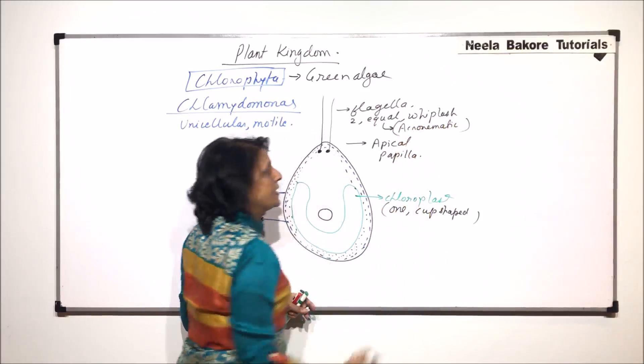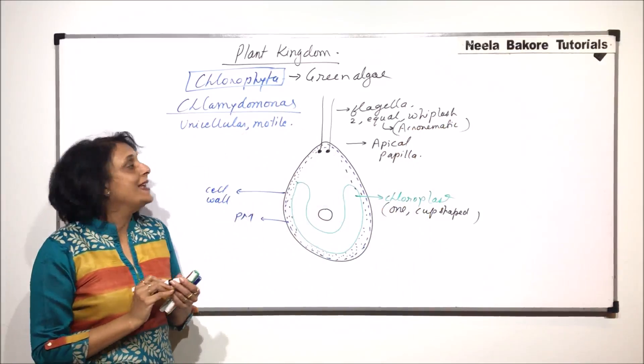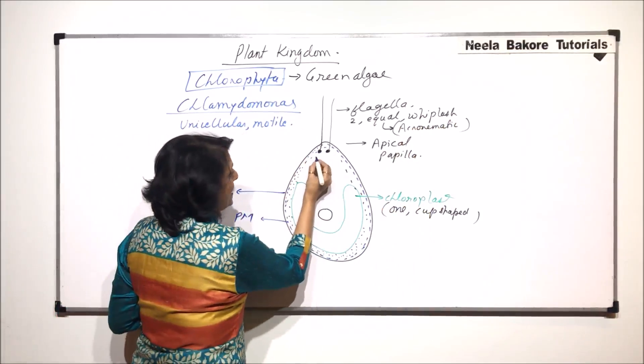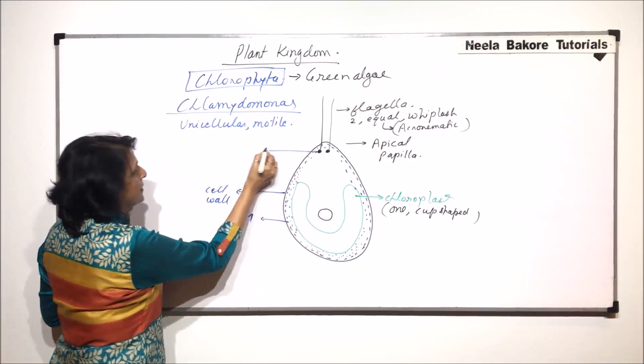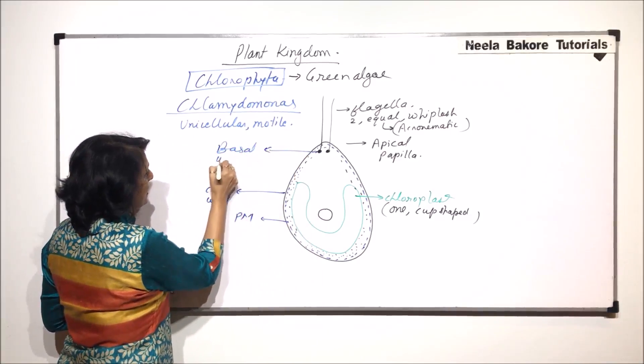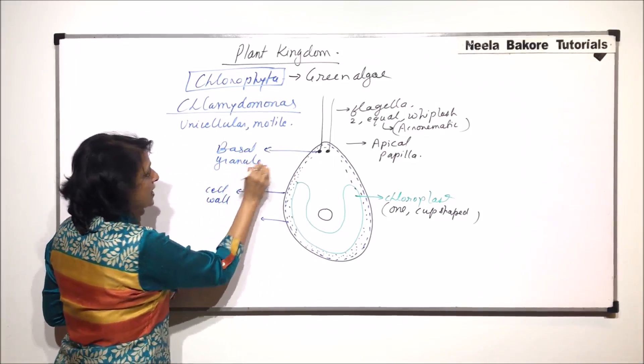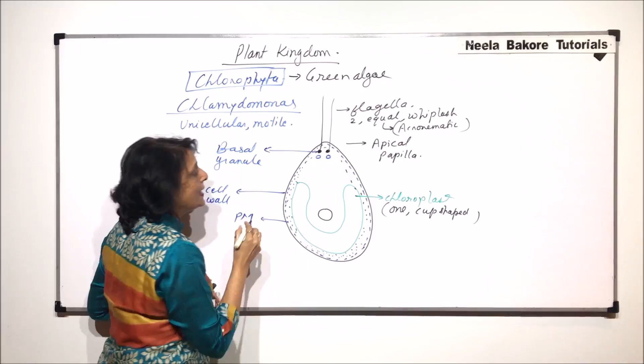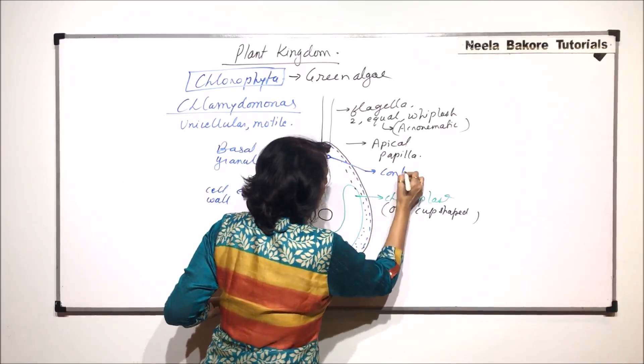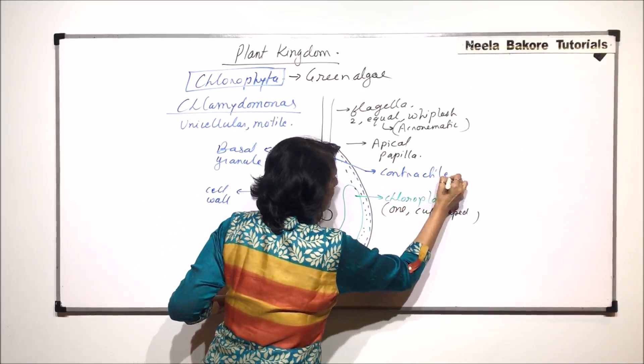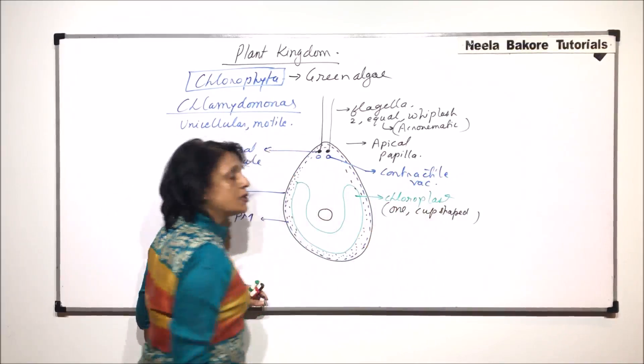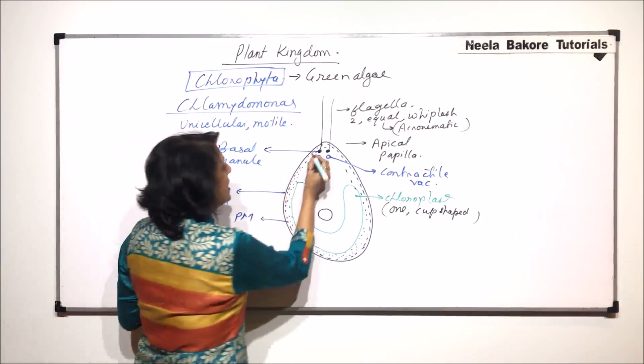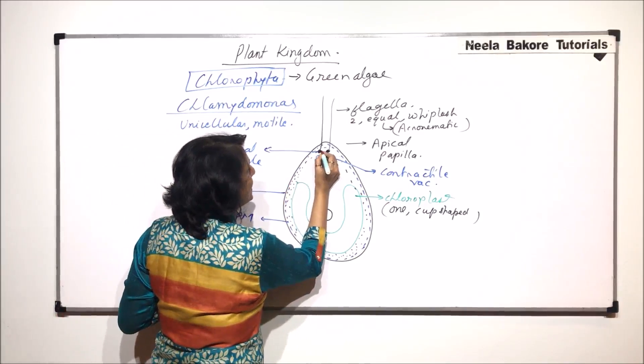Just beneath these basal granules we find two contractile vacuoles, and the function is osmoregulation.